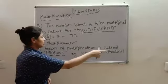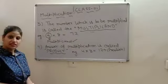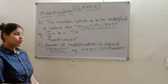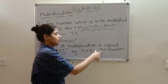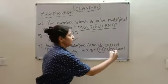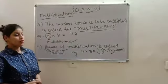Next, answer of multiplication is called product. Answer of multiplication is called product. For example, 4 threes are 12. So, here 12 will be called as product. Hope it is clear.